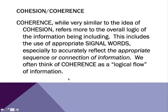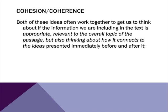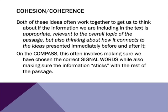Coherence, on the other hand — very similar to cohesion — is basically just talking about: are the ideas logical? For example, if I have a conclusion, does this seem to be the logical conclusion for the information we see before it? Oftentimes this is related with signal words. So we think about how does the information connect — is there a logical flow? Does one idea really connect to another? Is this idea the result of something or the cause? Very similar to cohesion, but coherence is thinking more about the idea of logic. The key is to think about how they work together — is the information appropriate and relevant to the overall topic, and how does it connect to the information before and after it?